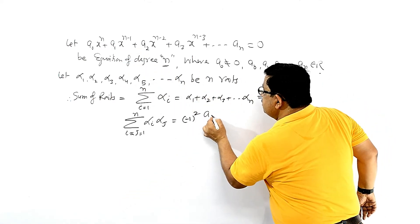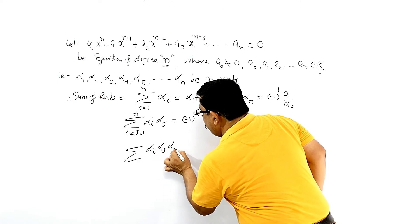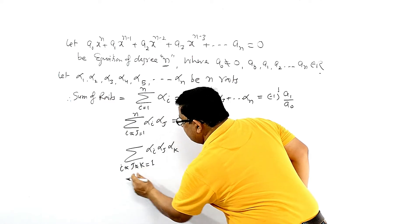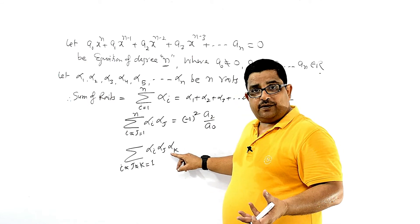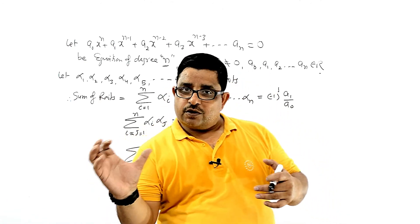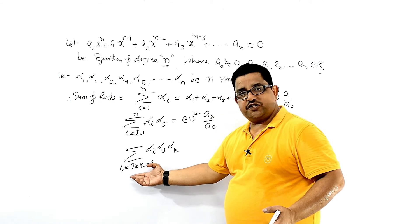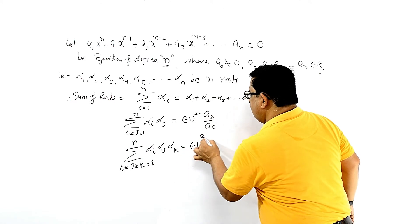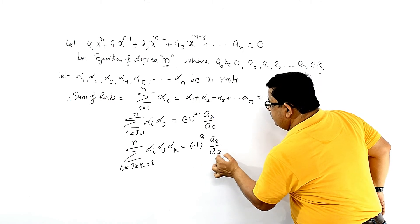Similarly, if you have to write the sum of products of triplets, then alpha_i · alpha_j · alpha_k where i ≠ j ≠ k, ranging from 1 to n — out of n roots, selecting triplets with no repetition — that goes up to n, and this value equals (-1)³ · a₃/a₀.